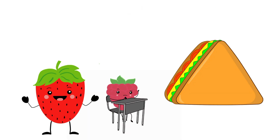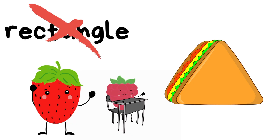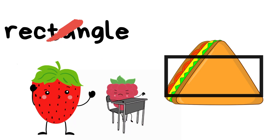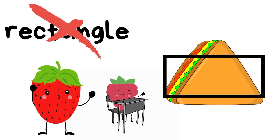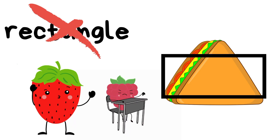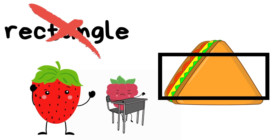How about this object — is it a rectangle? Does it have four sides? Are two of them shorter and two of them longer? Nope, this is not a rectangle. A rectangle has two short sides and two long sides, four sides in total, and this shape does not have four sides.